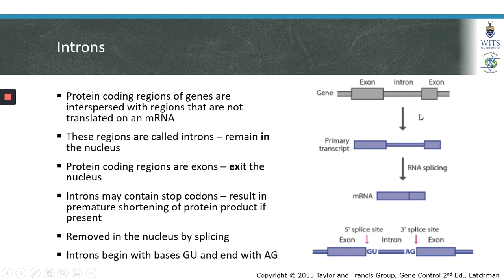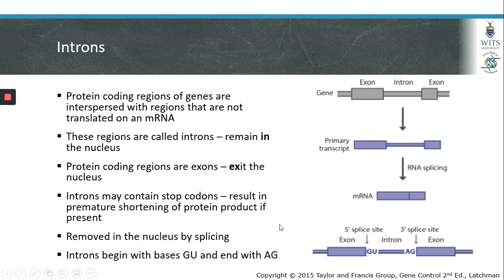Introns are removed in the nucleus before the mRNA is exported into the cytoplasm, since mRNAs are translated in the cytoplasm. Introns may contain stop codons which would result in premature shortening of the protein product if present when the mRNA is transported. Therefore, introns are removed in the nucleus in a process called splicing.